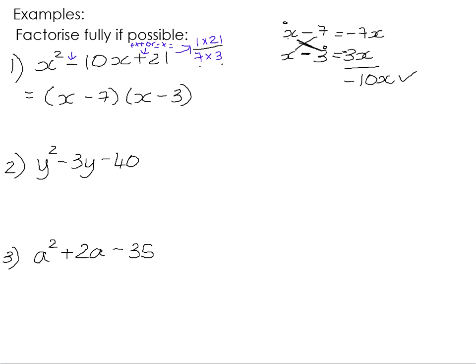Number 2: y squared minus 3y minus 40. Let's start by testing the factors that give a product of 40. There are quite a few: 1 times 40, 2 times 20, 4 times 10, and 5 times 8. Now we look at the signs. This is a negative 40, and the only combination of signs that gives a negative when multiplied is a positive times a negative.